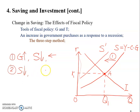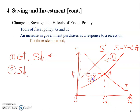If the interest rate stays at r1, the point on the new supply curve represents quantity supplied, while point A now only represents quantity demanded, since the supply curve has already shifted. Quantity demanded exceeds quantity supplied, so there is a shortage on the market at r1.